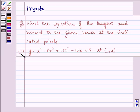Now here we are given the equation of the curve as x raised to the power 4 minus 6x cube plus 13x square minus 10x plus 5 at (1,3).